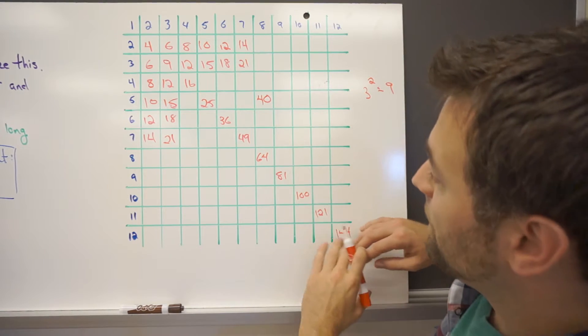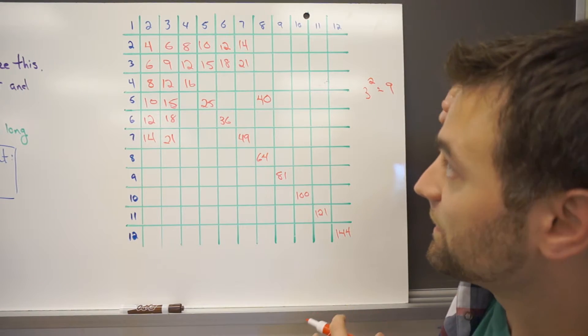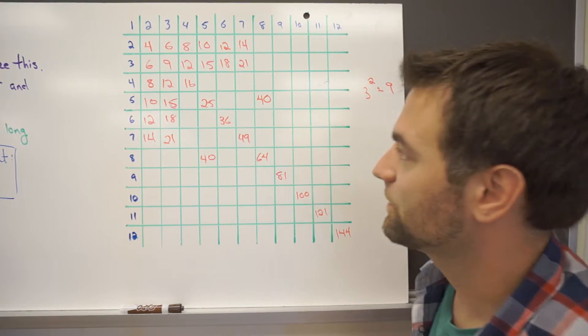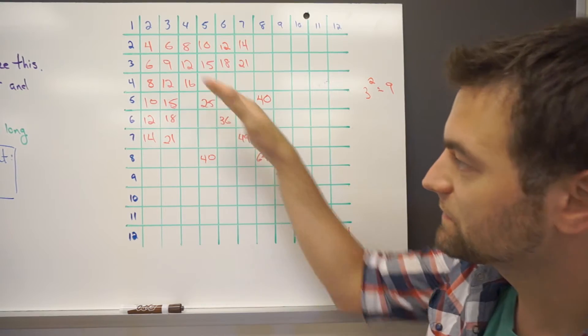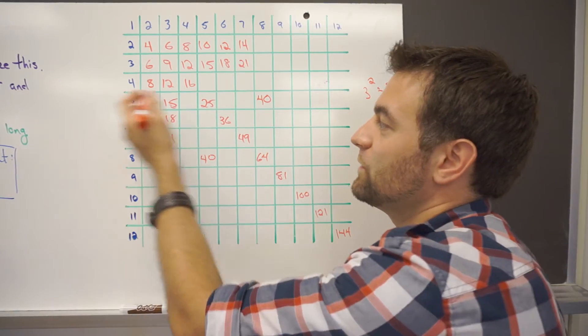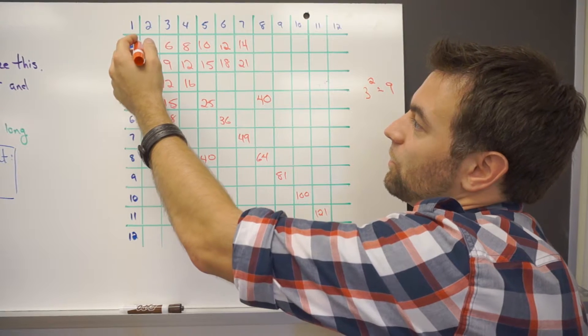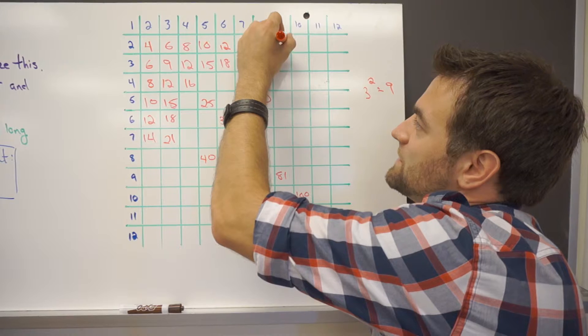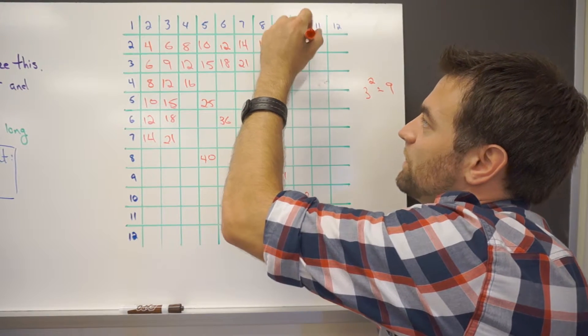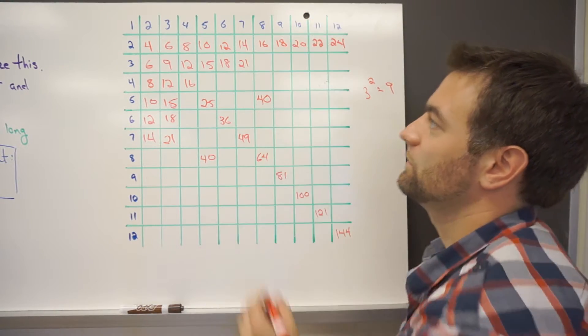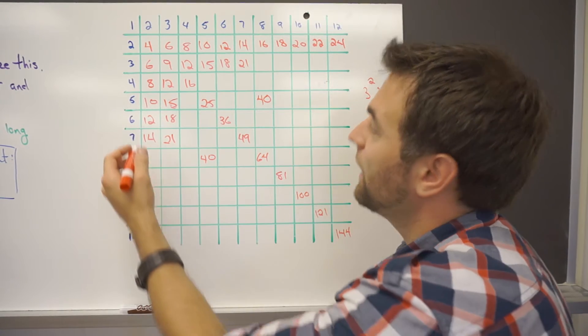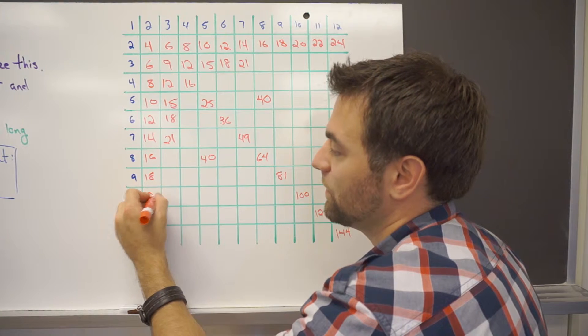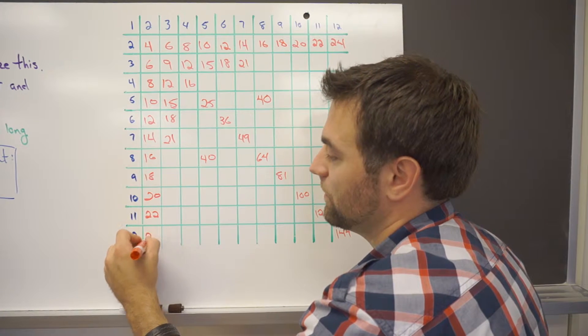And then everything on the opposite side of this line is mirrored. So that 40 matches up right here. It's mirrored around that line. Everything mirrors around this diagonal line here. And we can continue filling in the rest of the table here. So we have 2 times 8 is 16. Times 9 is 18. Times 10 is 20. 22 and 24. And that'll fill in the same way down here. There's 16, 18, 20, 22 and 24.